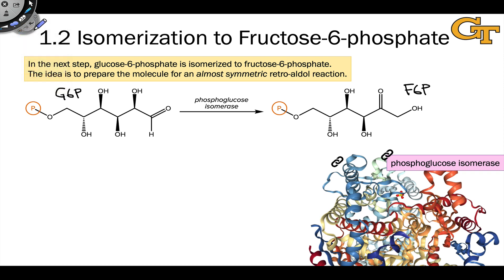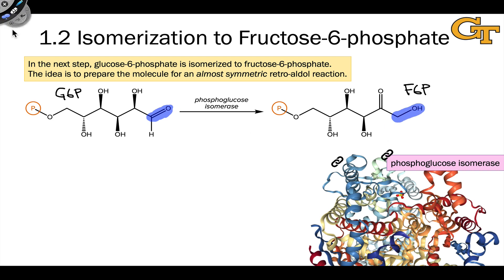To get a sense of what this reaction is doing, it helps to look at the oxidation level of the carbons involved, which are carbons 1 and 2 of glucose and fructose. In the starting material G6P, carbon-1 of glucose is involved in a ketone functional group. But in the product fructose-6-phosphate, this is now an alcohol, so reduction has occurred there. If we focus on carbon-2, it begins as part of an alcohol, but becomes part of a ketone in the final product. So there's a redox isomerization going on here, where a reduction happens at carbon-1 and an oxidation occurs at carbon-2.